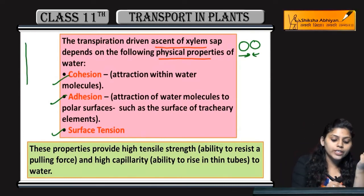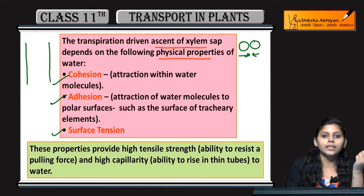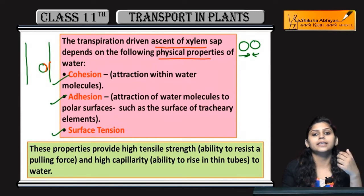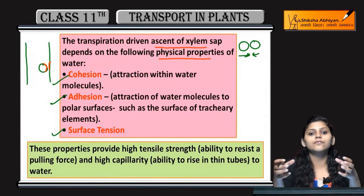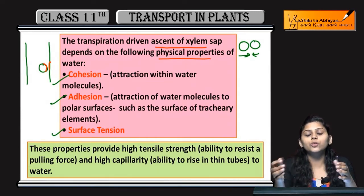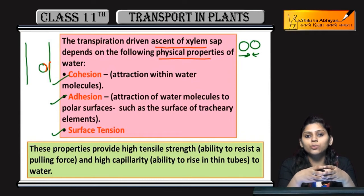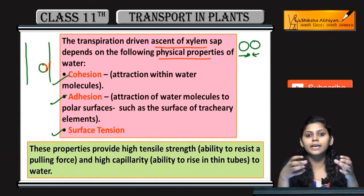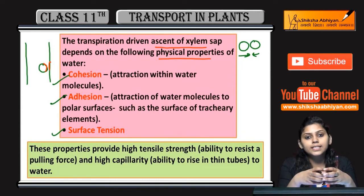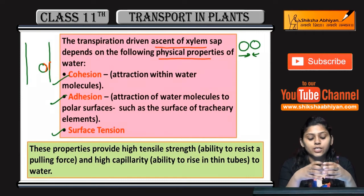अब water किसी column पे travel कर रहा है, तो उस column की और water की जो attraction है, that is Adhesion. And Surface Tension — water molecule minimum surface area occupy करने के लिए अपने आप में tension create करता है, that is Surface Tension.